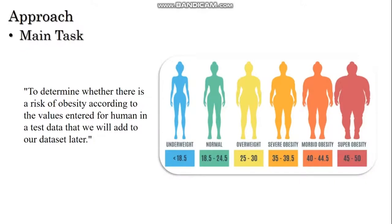Main task: The task we will answer by using the information in the dataset and using the necessary techniques is to determine whether there is a risk of obesity according to values entered for human in a test data that we will add to our dataset later. As a result, we are trying to find out if there is an obesity risk by using the features of test data in the dataset. We use the values of our friends in the group as test data. In this way, we learned whether we have a risk of obesity or not. We have also included extensive information on this subject in our reports.